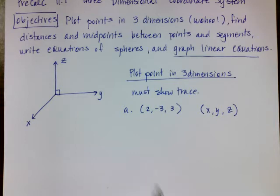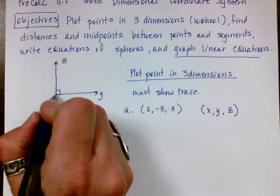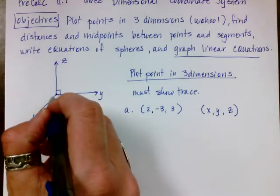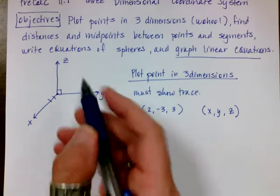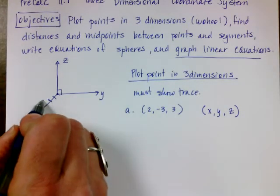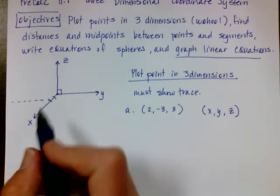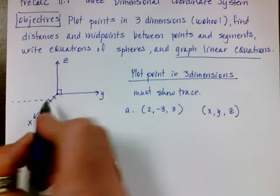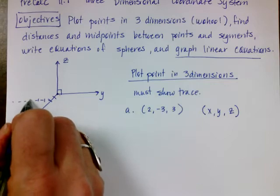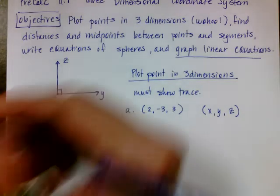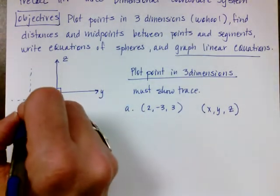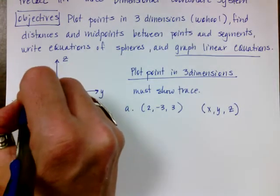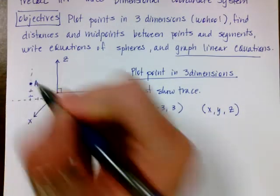Here's the way we graph in three dimensions. I'm going to start at the origin and go two in the positive x direction. Then I'm going to go negative three in the y — if positive y goes to the right, negative y goes to the left — starting right where I left off on my positive x. So I go one, two, three in the negative y. Then I draw a dotted line and go up one, two, three in the z. This is my point, and I'm going to call it A.